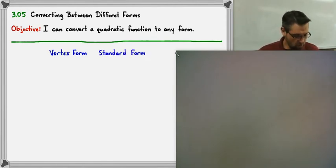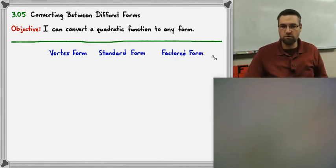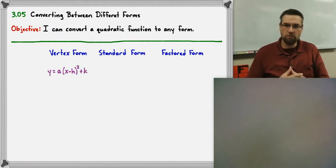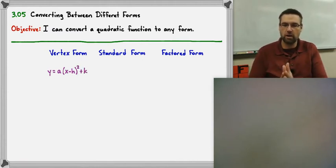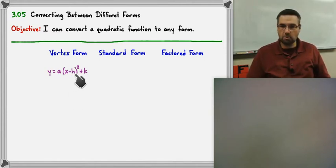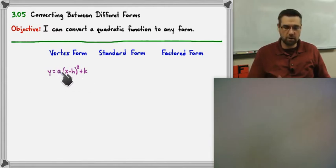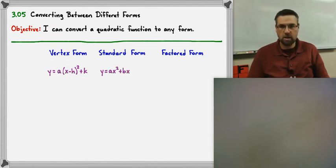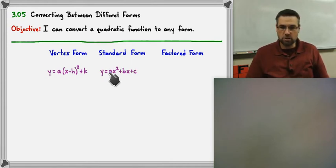Taking a quick review of the three forms — vertex, standard, and factored form. Vertex form is y equals a times (x minus h) squared plus k, where h and k represent the vertex, and a is whether we open up or open down, and also the slope pattern. Standard form is y equals ax squared plus bx plus c. The a is your slope pattern and whether it opens up or down, and c is the y-value of your y-intercept.